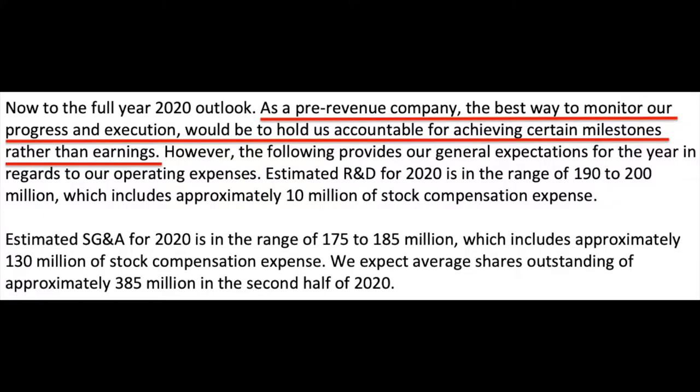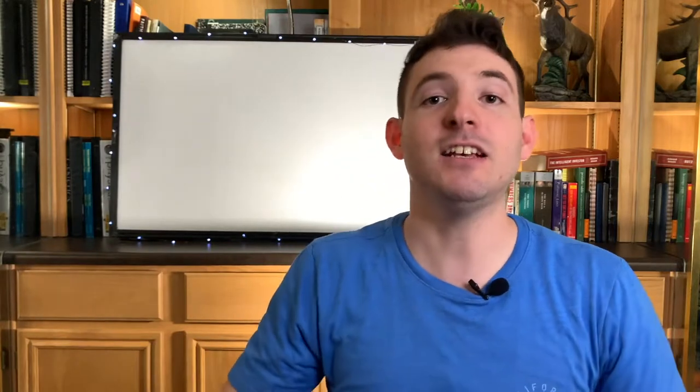Alright so let's get into the nitty-gritty. There are three things that I look for in Nikola before I invest in them pre-revenue, and their CFO Kim Brady actually said it best in their earnings call when he said: as a pre-revenue company, the best way to monitor our progress and execution would be to hold us accountable for achieving certain milestones rather than earnings. I agree with the majority of the statement. The first thing you want to look at is their milestones. Are they reaching their milestones by the dates that they specify within their budget? In the conference call they stated five milestones that you should keep an eye out for.